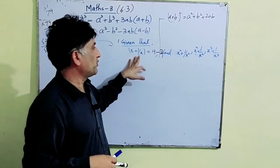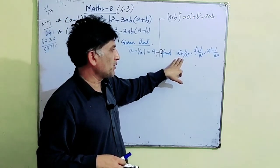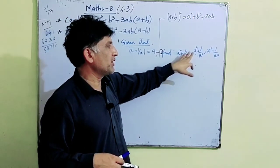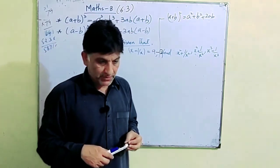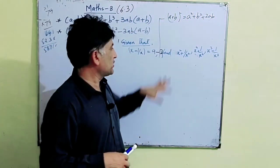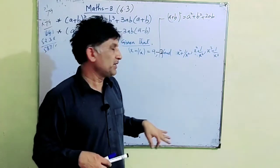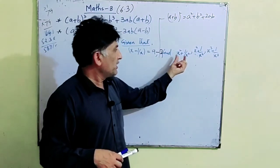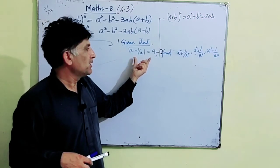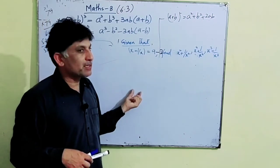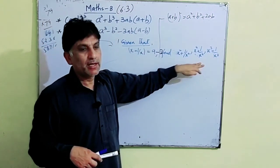So given x + 1/x = 9, we needed to find x² + 1/x², x⁴ + 1/x⁴, and x³ + 1/x³. We have found the first two. To find x² + 1/x², we squared equation 1. Then squaring the result gave x⁴ + 1/x⁴.